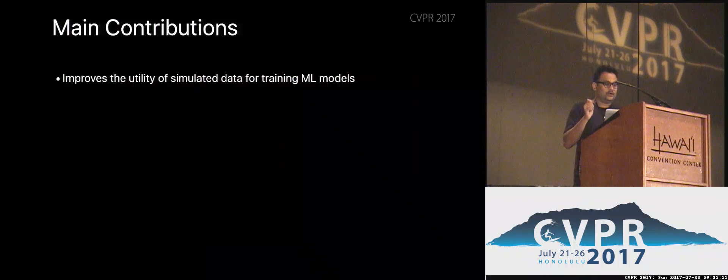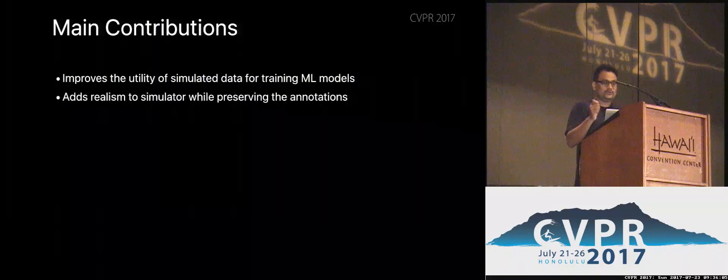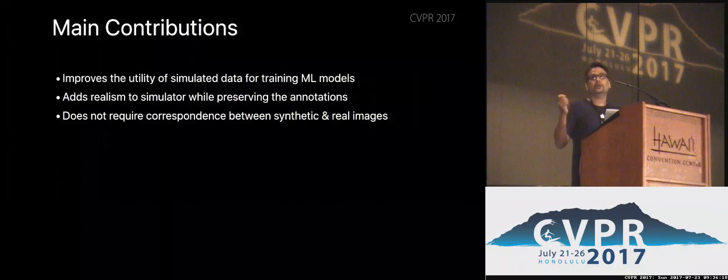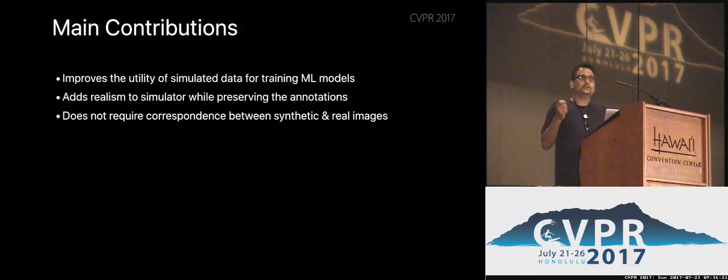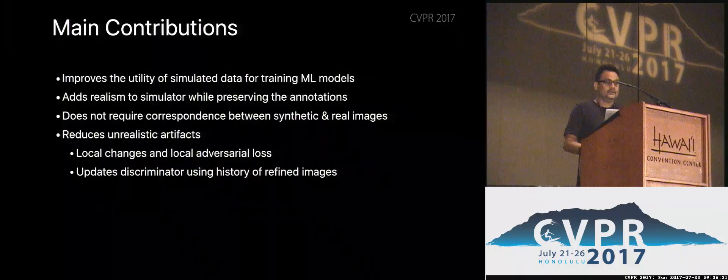In summary, our main contributions are: we improve the utility of simulated data for training machine learning models and quantitatively evaluate performance. We add realism to simulator output while preserving annotations and reducing artifacts. We do not require any correspondence between synthetic and real images, in contrast to some image-to-image translation work. We use local adversarial loss and a history of images for updating the discriminator to reduce artifacts. We also have a blog at machinelearning.apple.com which is easier to read — we encourage you to check it out.